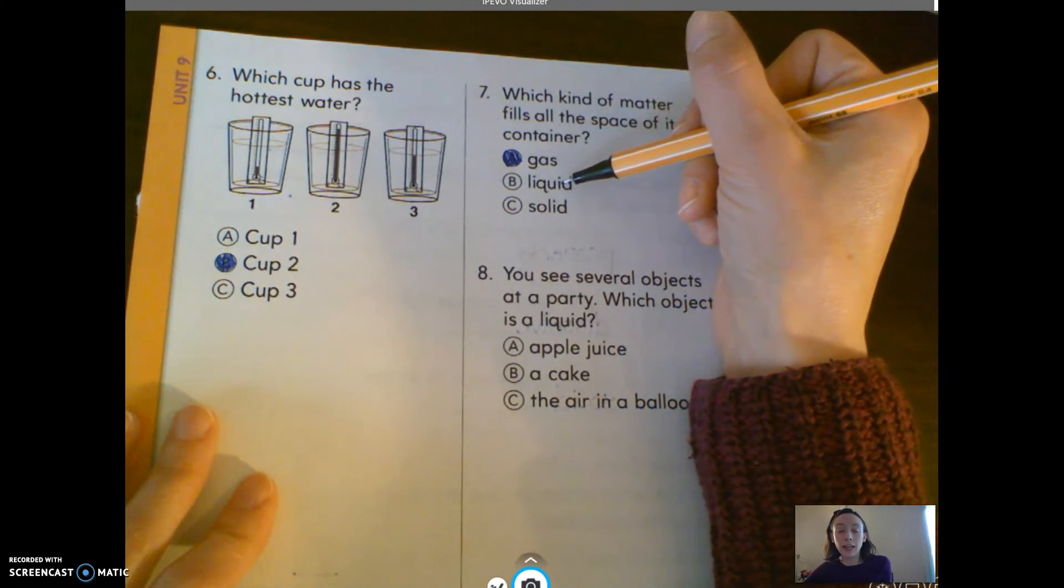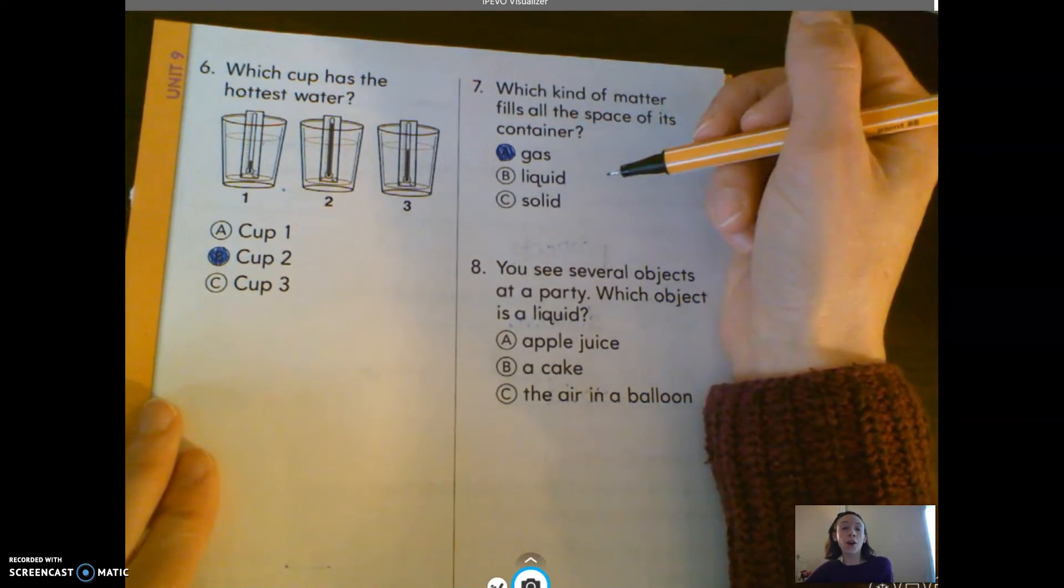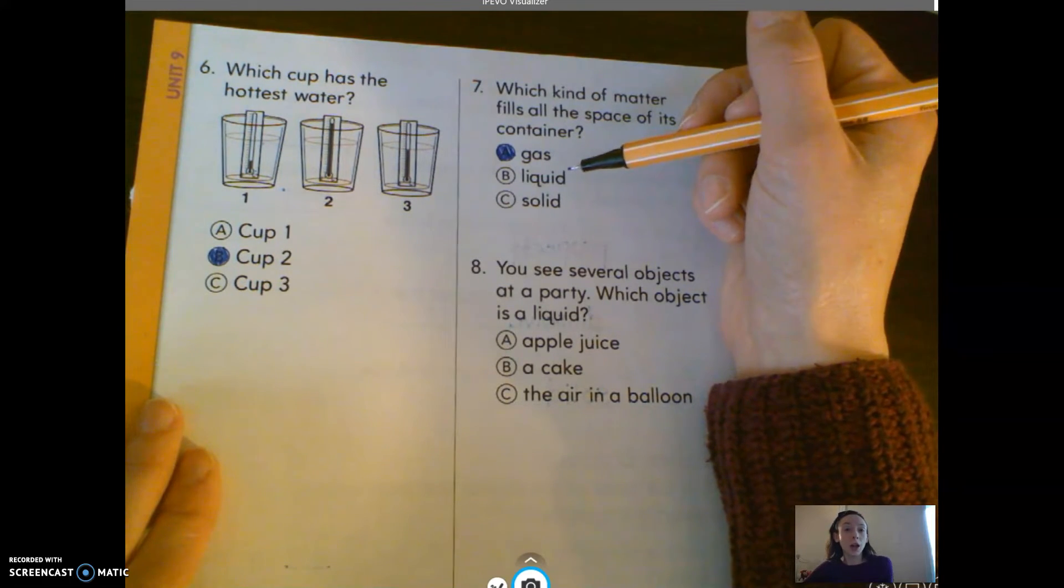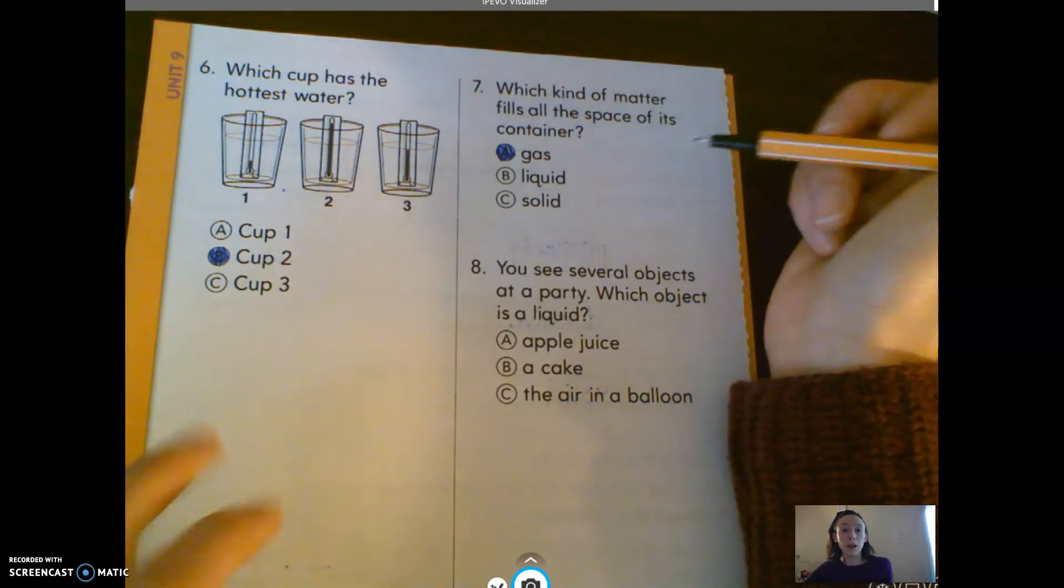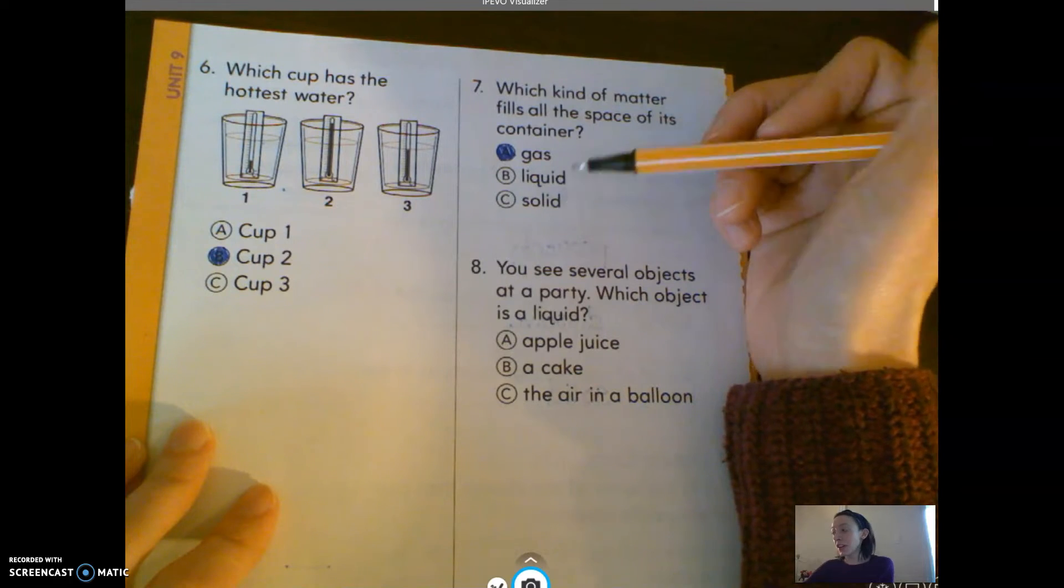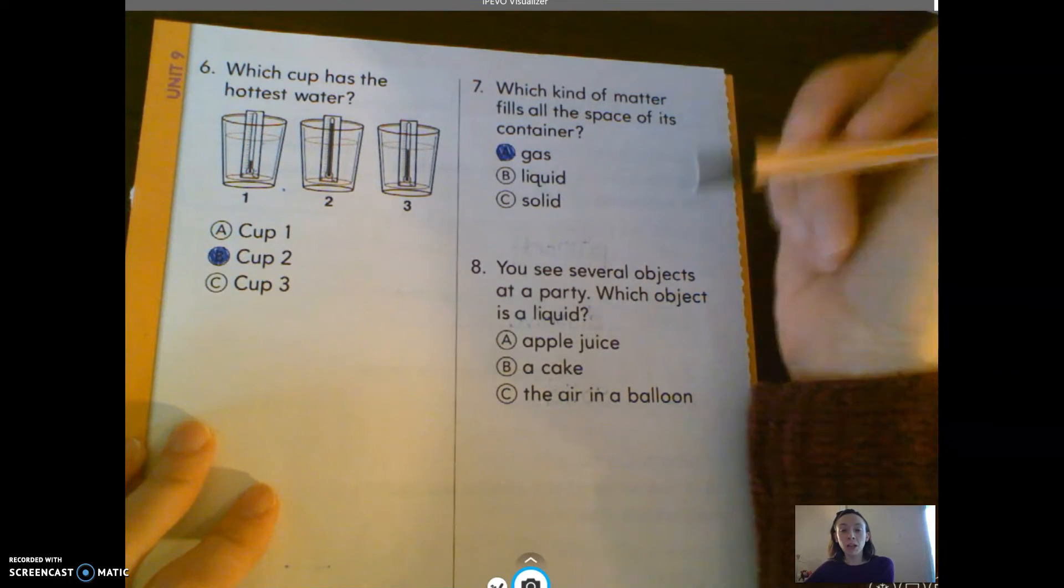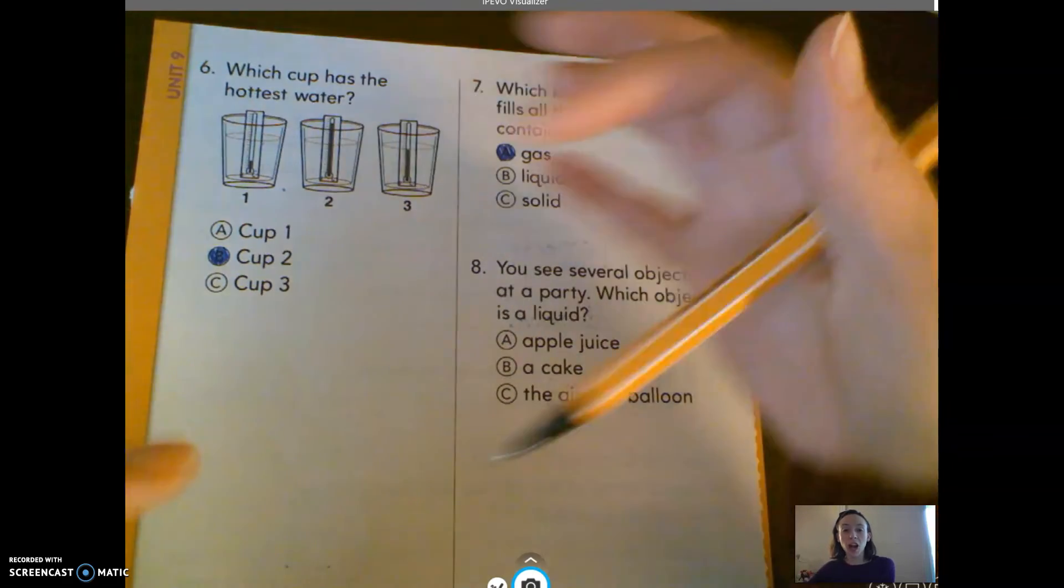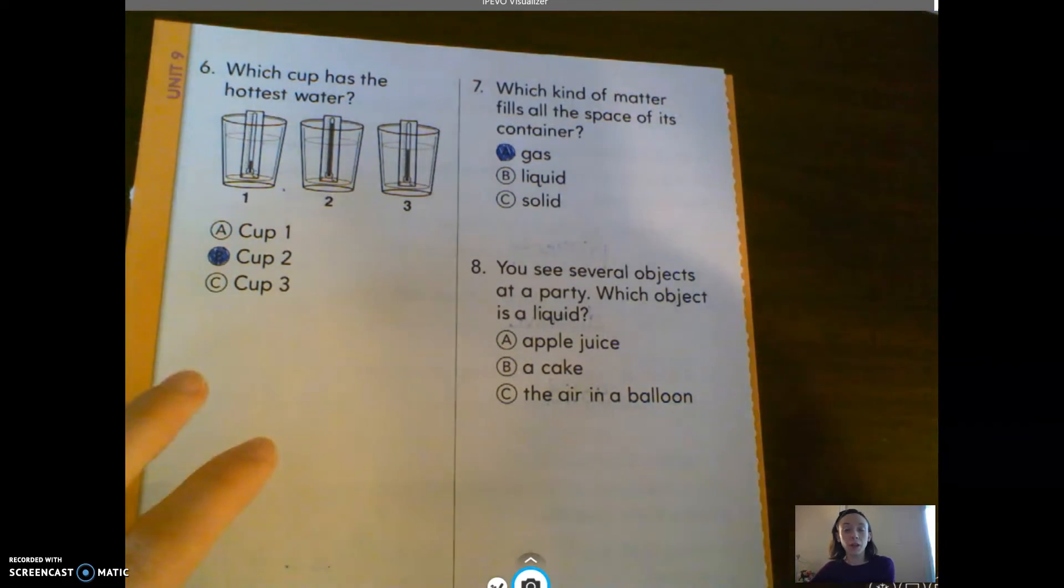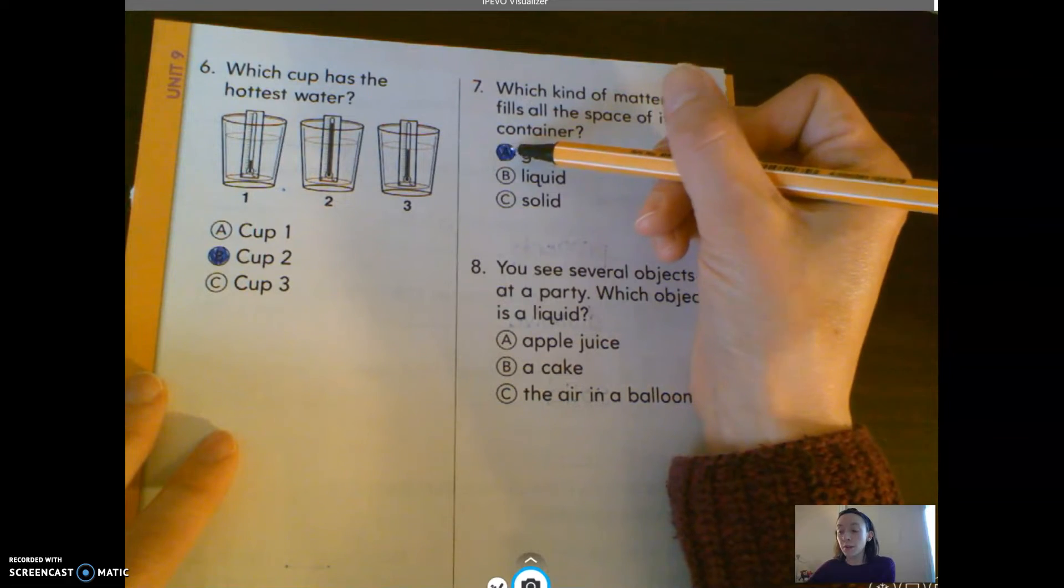Liquid fills the container and kind of matches what the container looks like. So if you pour milk into a cup, it will take the shape of its container. Solids, like if you put a spoon in a cup, the spoon would not expand and get bigger to fill up the cup. It just stays the same. It doesn't change shape. So that would have to be A, gas.